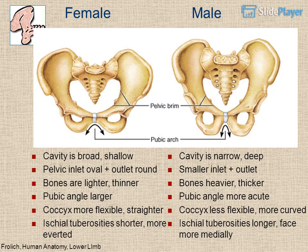Female vs. male pelvis: the female cavity is broad and shallow, with an oval pelvic inlet and round outlet; bones are lighter and thinner; pubic angle is larger; coccyx is more flexible and straighter; ischial tuberosity is shorter and more everted. The male cavity is narrow and deep, with a smaller inlet and outlet; bones are heavier and thicker; pubic angle is more acute; coccyx is less flexible and more curved; ischial tuberosity is longer and faces more medially.